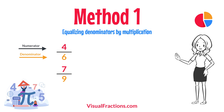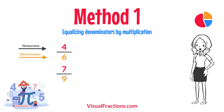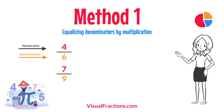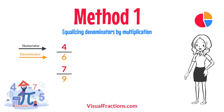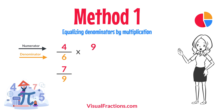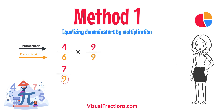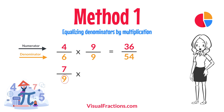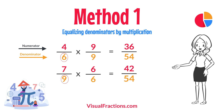First, let's equalize the denominators by multiplying each fraction's numerator and denominator by the other fraction's denominator. This method works by using the denominators of each fraction to create a common denominator, allowing us to compare the fractions directly. For 4 sixths, multiply both the numerator and the denominator by 9, the denominator of 7 ninths.